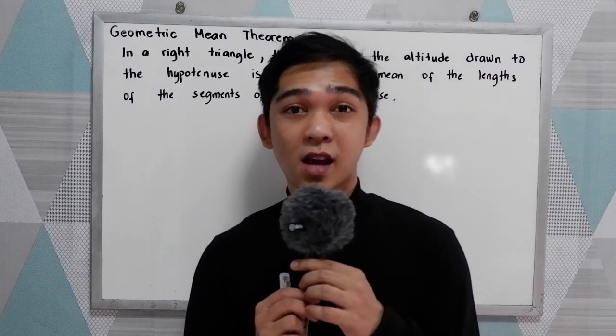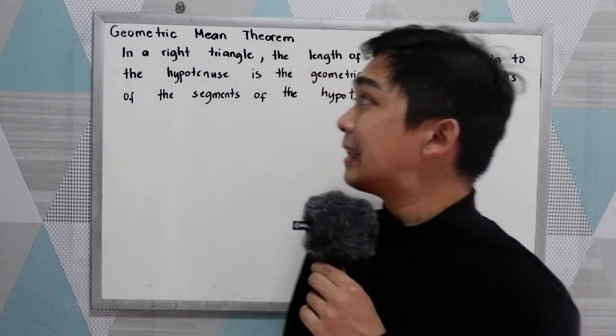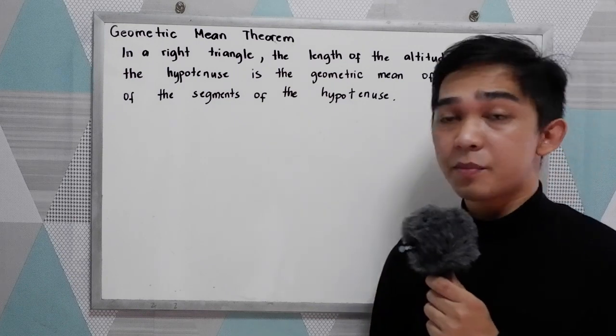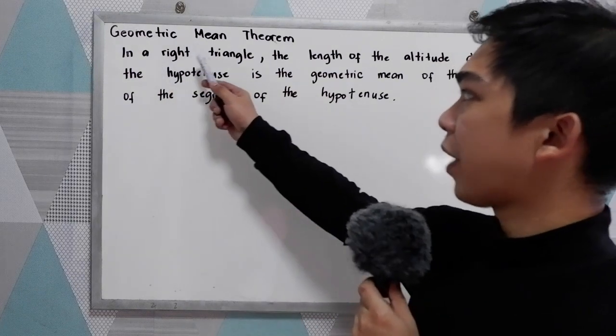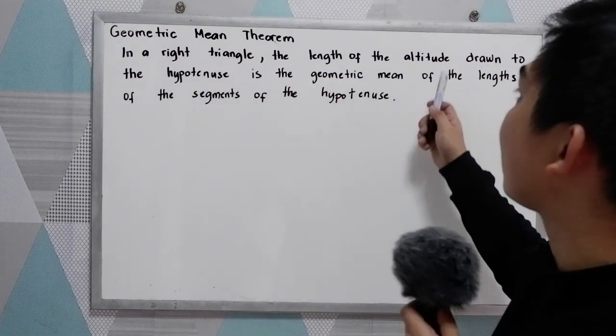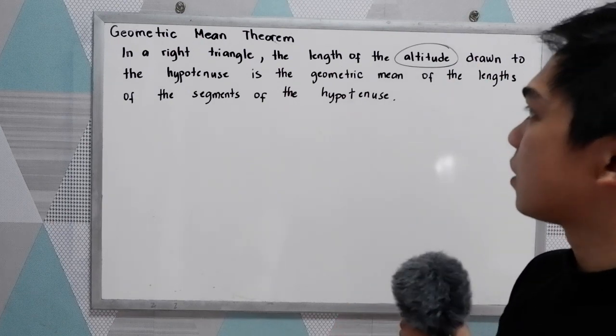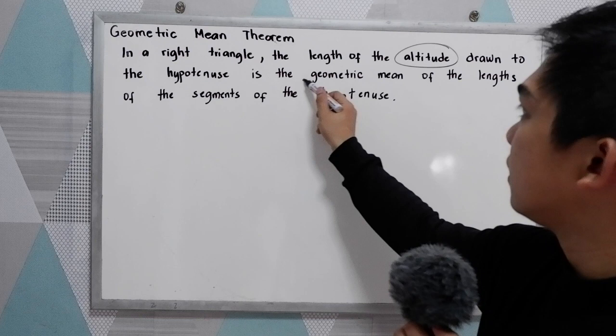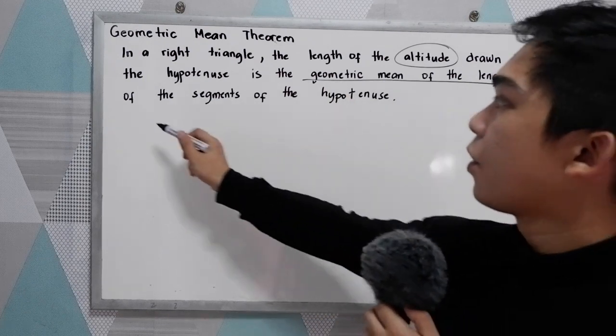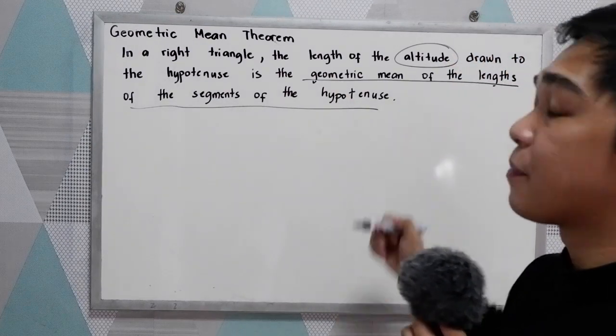Good day everyone, today I will be discussing the Geometric Mean Theorem. The theorem states that in a right triangle, the length of the altitude drawn to the hypotenuse is the geometric mean of the length of the segments of the hypotenuse.